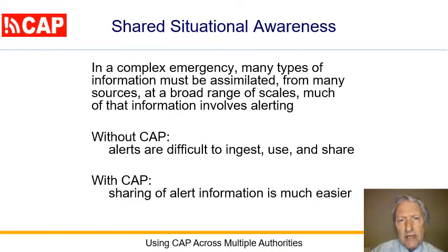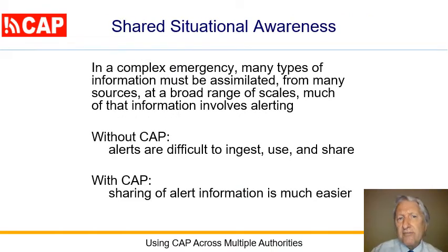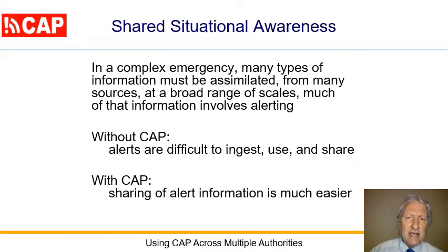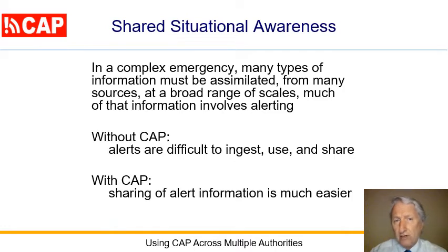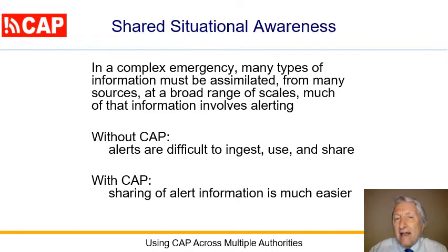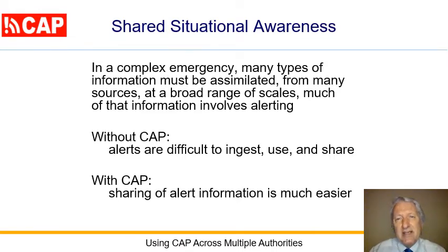In a complex emergency, information of many types must be assimilated from many sources over scales ranging from local to national, maybe global. Alerts are a big part of that. Without CAP, this variety makes alerts difficult to get, to use, and to share because they're communicated in so many media and formats.